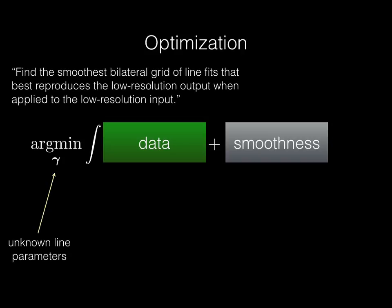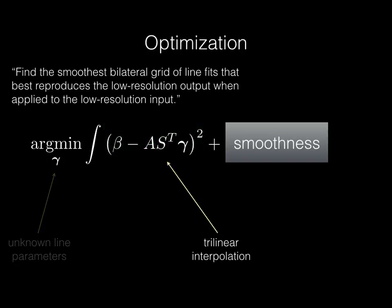We seek to find a 3D bilateral grid of line parameters, which we will call gamma. For each pixel of the input, we trilinearly interpolate gamma based on the pixel's x, y, and intensity. These are the rows of S-transpose and yield the linear model's slope and offset at each pixel.